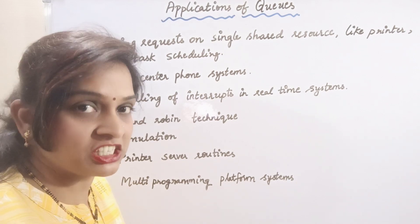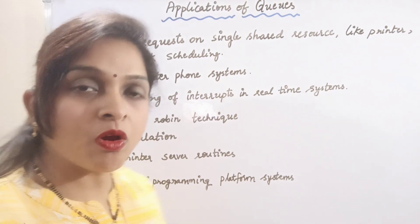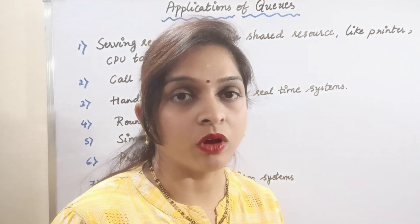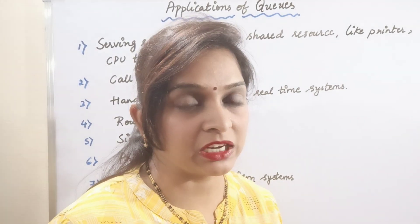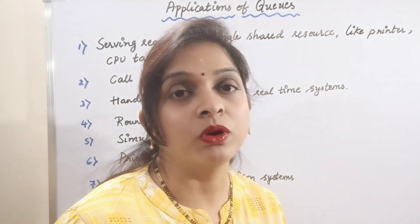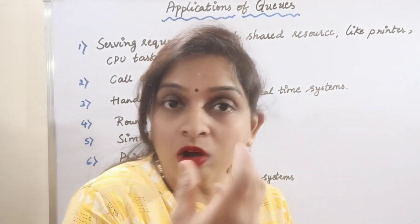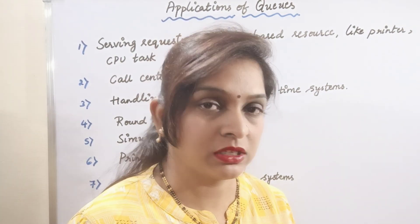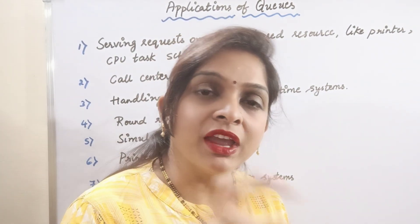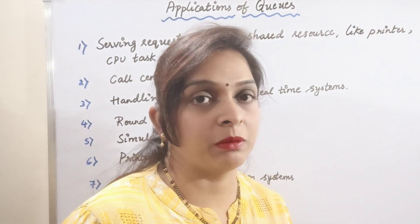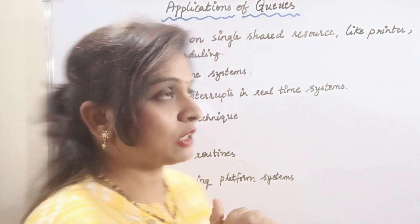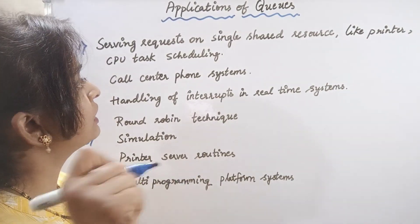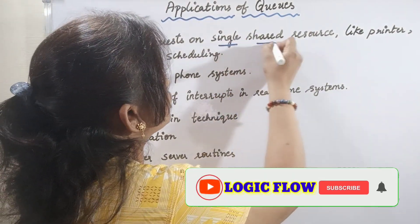Applications of queues means the fields where we can use queues. We all know how this queue data structure works — how it is represented in memory — and the ordering principle of queue, which is first in first out, first come first serve. So where is this actual concept implemented? It is used in serving requests on a single shared resource system.